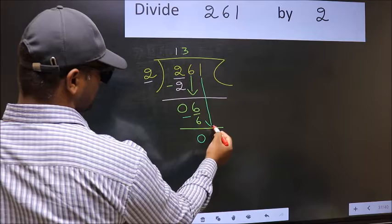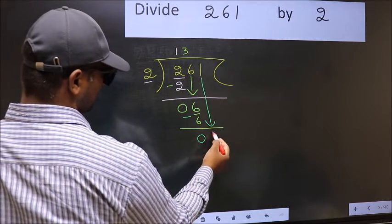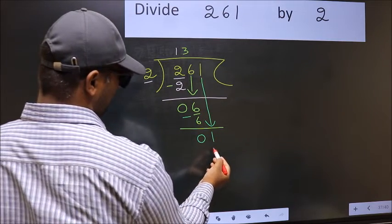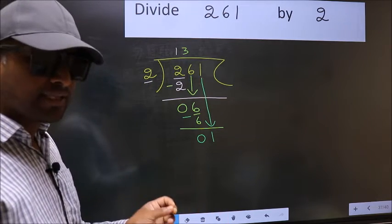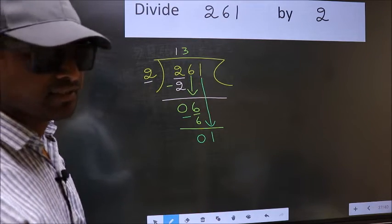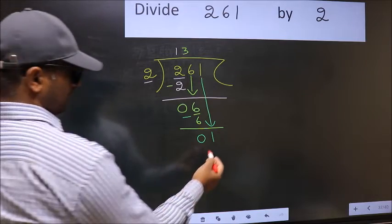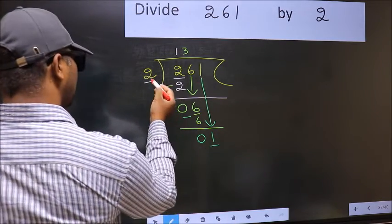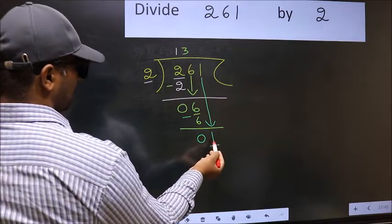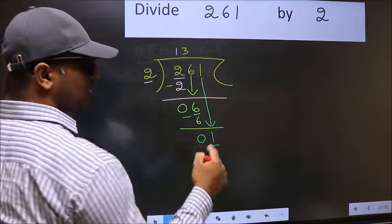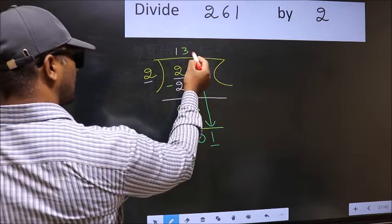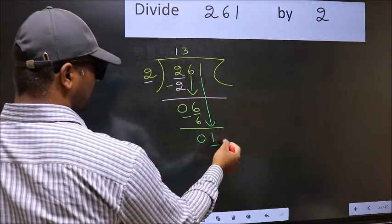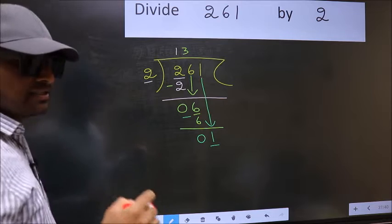Now you bring down the beside number. So 1 down. After this step, the mistake happens. And the mistake is this. Here you have 1, and here 2. 1 is smaller than 2. So what many do is, they put a dot and take 0 here. Which is wrong.